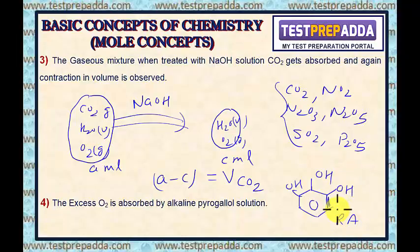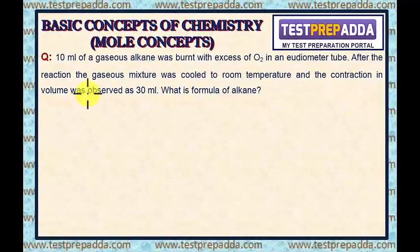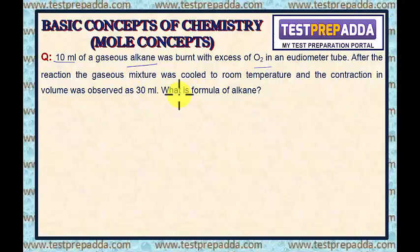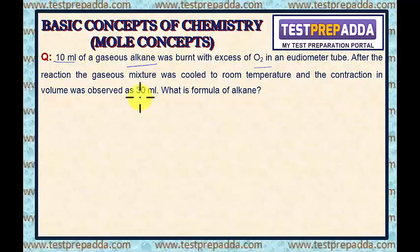Alkaline pyrogallol is a white crystalline powder — I will draw its structure here. This is pyrogallol. It is a white crystalline powder and a strong reducing agent. Now, to understand eudiometry better, I will take a few questions. Here the question says: 10 ml of a gaseous alkane was burned with excess of O2 in a eudiometer tube. After the reaction, the gaseous mixture was cooled to room temperature and the contraction in volume was observed as 30 ml.